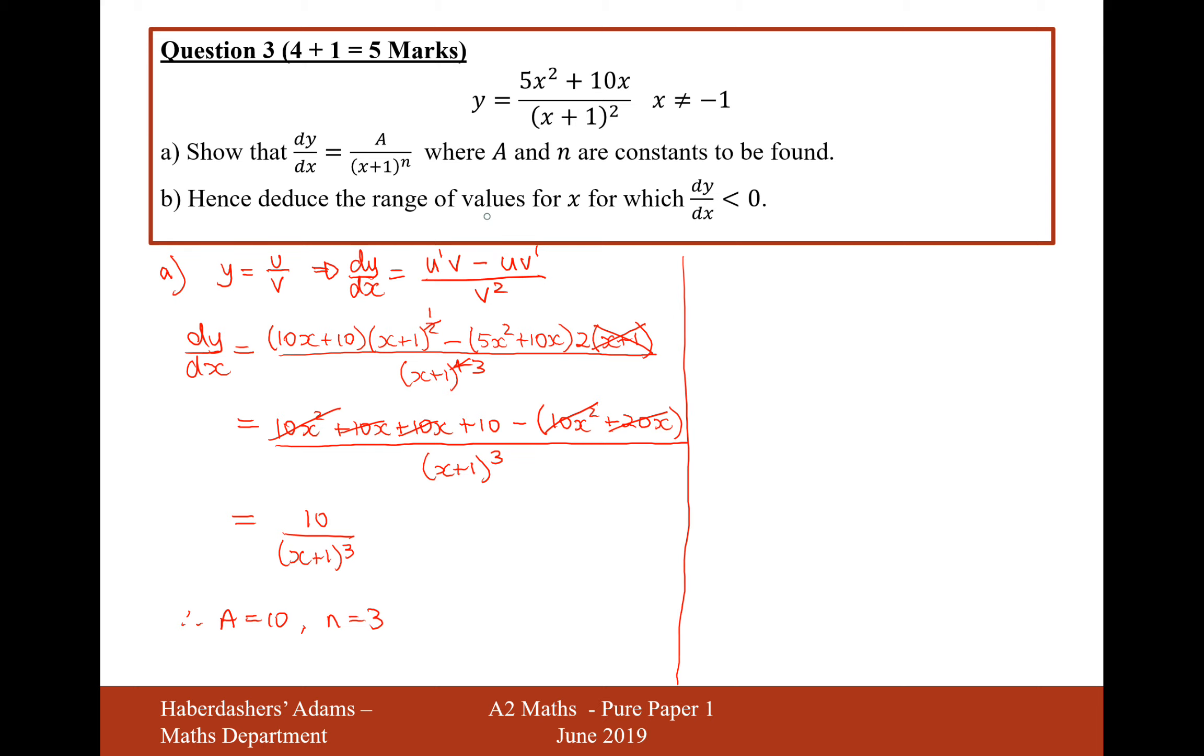Hence, deduce the range of values of x for which dy by dx is less than 0. So dy by dx. This is part b now. dy by dx is equal to 10 over x plus 1 cubed.